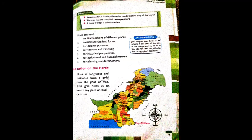Maps are used for different purposes. Number one: to find the location of different places. If you need to find the exact location of any place or area, maps will immediately give you the exact location. Number two: to measure the land forms.